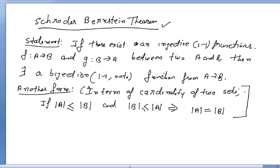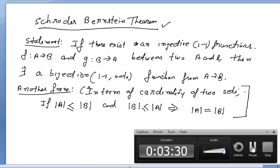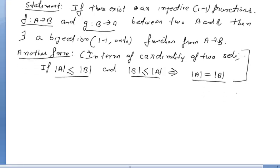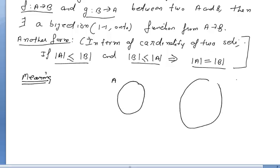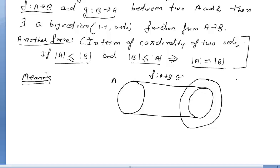If you try to understand this theorem graphically — I will explain the meaning first, then we will go to the proof. If you have a set A and a set B, where B is larger compared to A, and you have a function f from A to B which is one-one, then the image of A is there in B. Every element of A has a unique image in B.